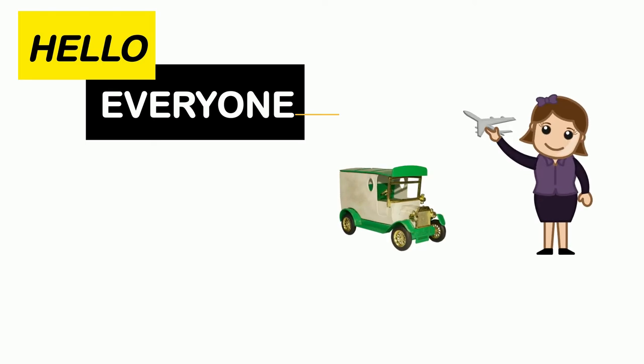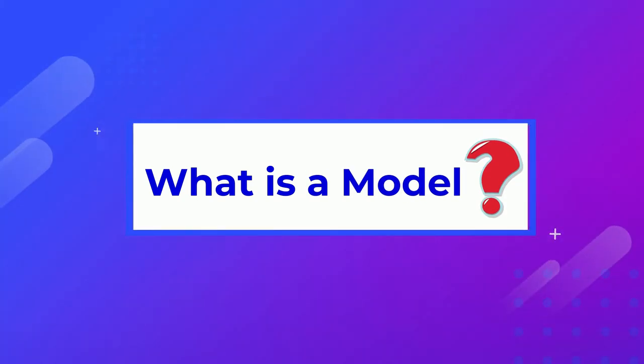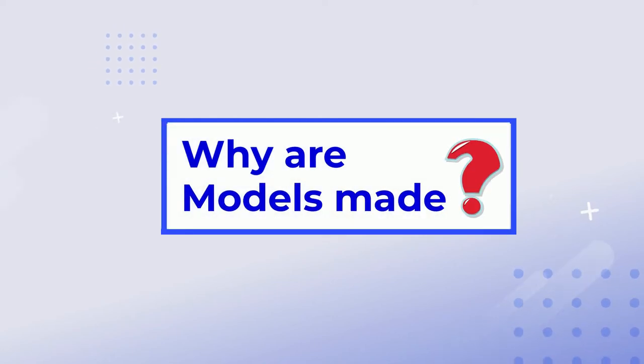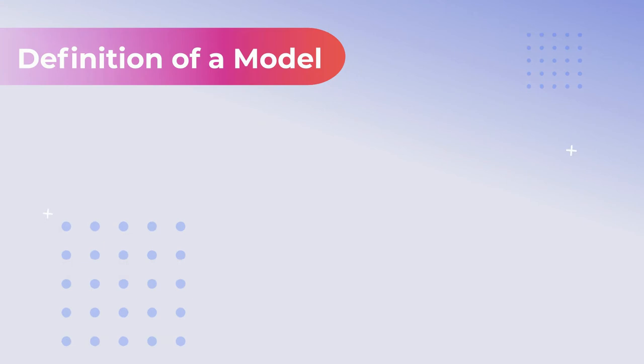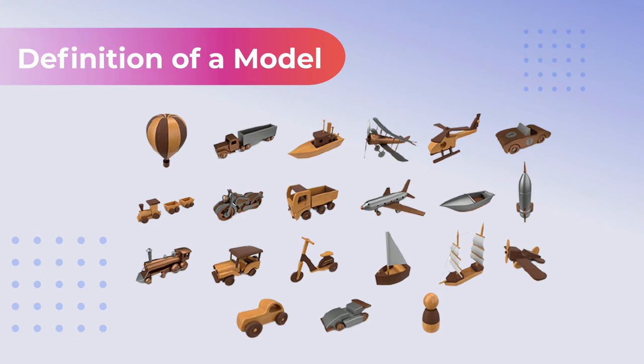Hello everyone, our today's topic is models are small. We will be learning about what is a model, what are some examples of models, and why are models made. Definition of a model: models are objects which have the same shape as the real objects in the world, but are a lot smaller in size.